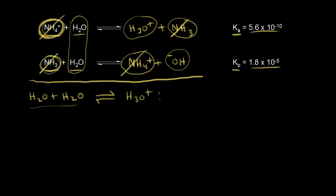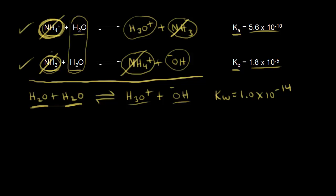This net reaction should sound familiar. It is the auto-ionization of water, where one water molecule acts as an acid, one water molecule acts as a base, and we get H3O+ and OH minus. The equilibrium constant for the auto-ionization of water — we've already seen that Kw is equal to 1.0 times 10 to the negative 14. So we added these two reactions together and got this net reaction.